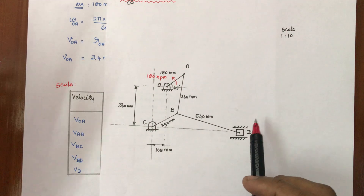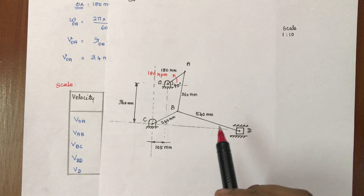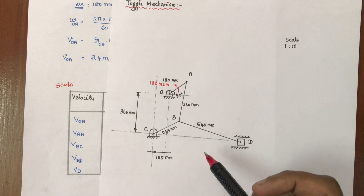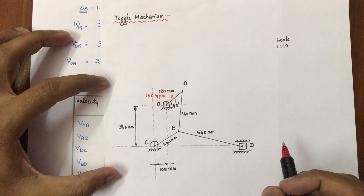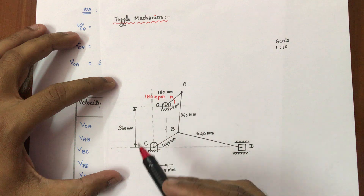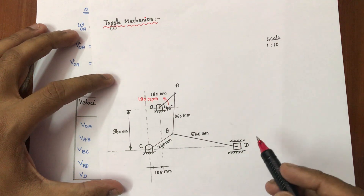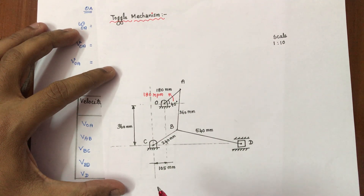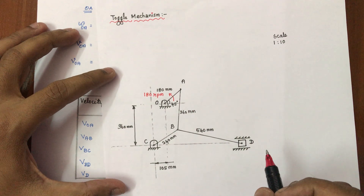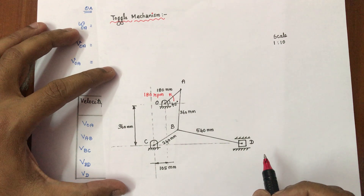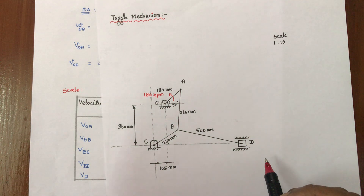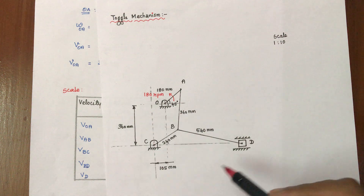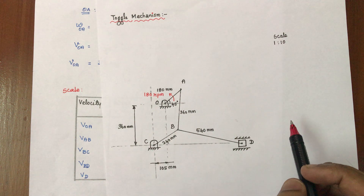In this complicated mechanism, all links are part of the 4-bar chain and connected with the slider. We will see how the velocity diagram is drawn. The configuration diagram is slightly more involved than a standard 4-bar chain mechanism, so we'll go through it step by step.